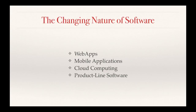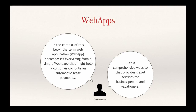Pressman talks about the changing nature of software with regard to four categories: web apps, mobile applications, cloud computing, and product line software. Regarding web apps, his definition is fairly broad — so everything from a simple data entry form to a sophisticated travel website is considered a web app.